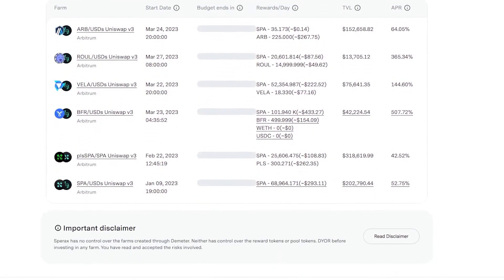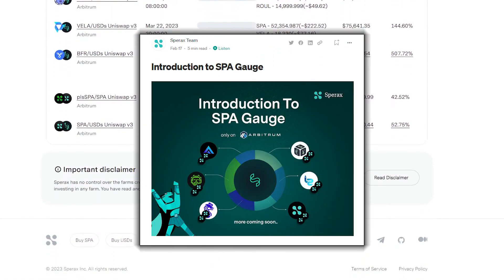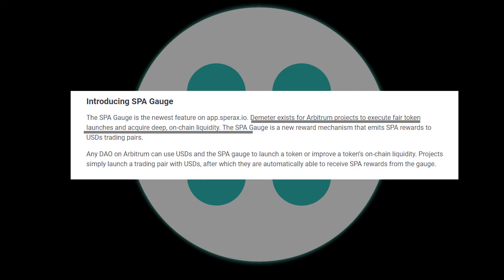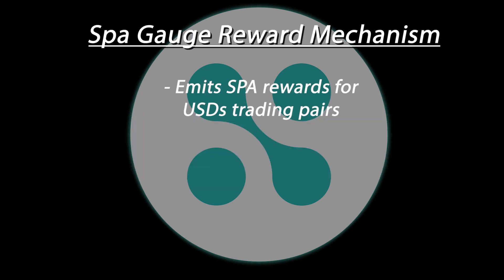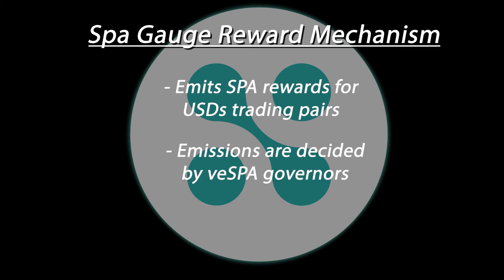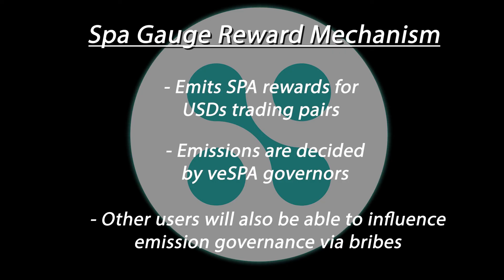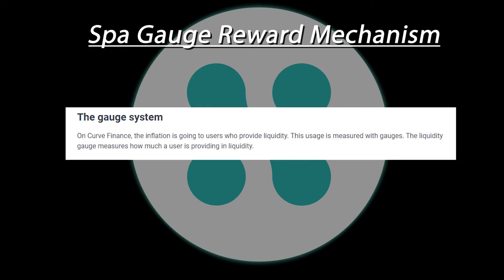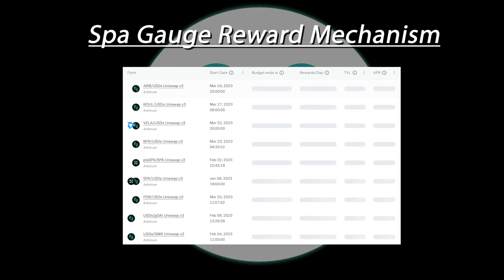Sparex also recently launched their SPA gauge product, which is a new tool for Arbitrum projects to execute fair token launches and acquire deep on-chain liquidity. The SPA gauge is a new reward mechanism that emits SPA rewards for USDS trading pairs. VE SPA holders will be able to govern how fee emissions to those pools are distributed and choose which ones are more or less incentivized. Users wanting to influence the way rewards are distributed will also have the ability to bribe VE SPA holders into deciding which pools they allocate votes — similar to the classic bribing mechanism also seen on Curve. New users who want to take advantage of the gauge product can do so through creating their own USDS trading pairs or by voting on it through a governance proposal.